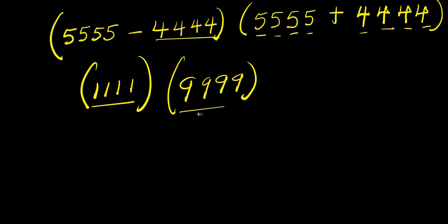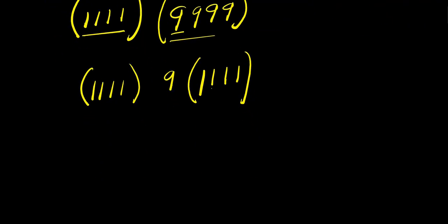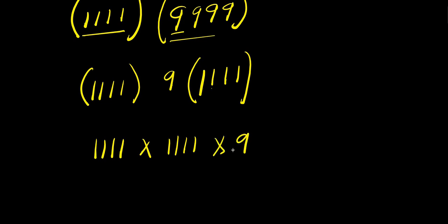Now I can factor out 9 from 9999. So 1111 times 9999 becomes 1111 times 9 times 1111, because 9999 divided by 9 gives 1111.